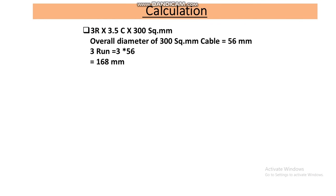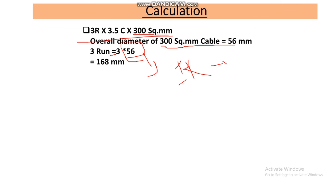So for three runs of 3.5-core 300mm² cable, the overall diameter is 3 × 56mm = 168mm. The overall diameter for the three runs of 300mm² cable is 168mm.